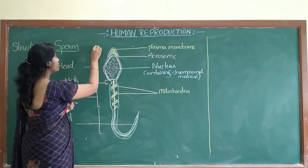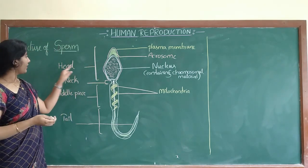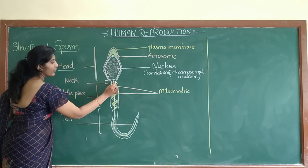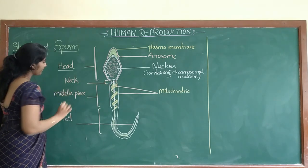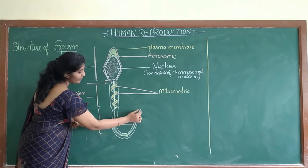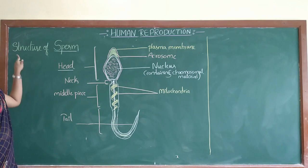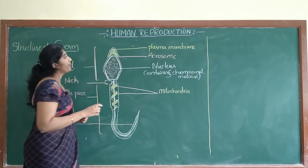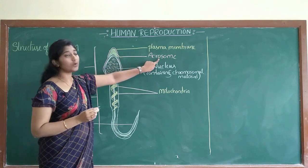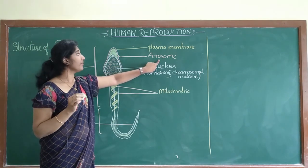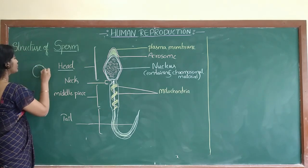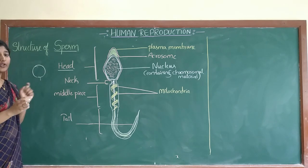The sperm is divided into four regions: the head region, the neck, the middle piece, and the tail. In the head region you can see a green-colored structure called the acrosome. The acrosome contains lytic enzymes — enzymes that break down the layers of the ovum during fertilization, when the sperm meets the egg.